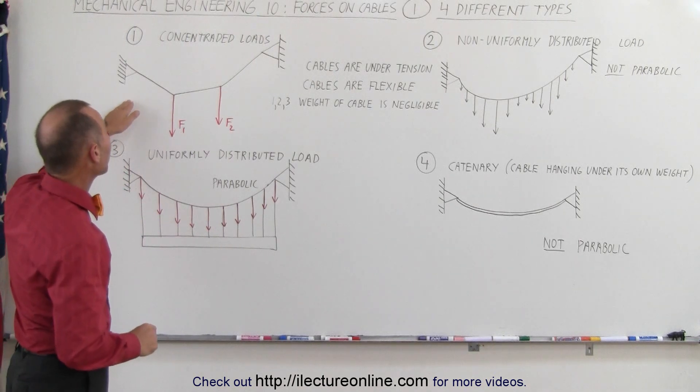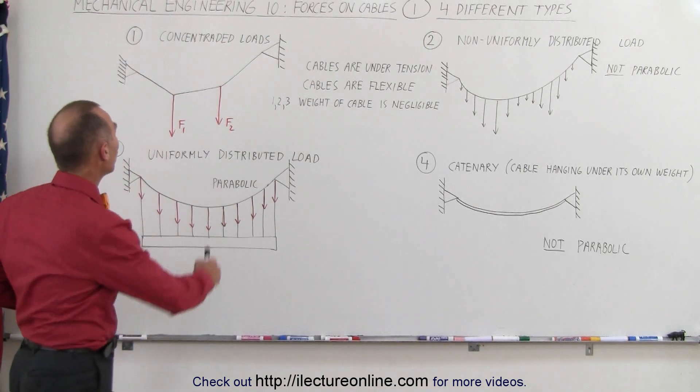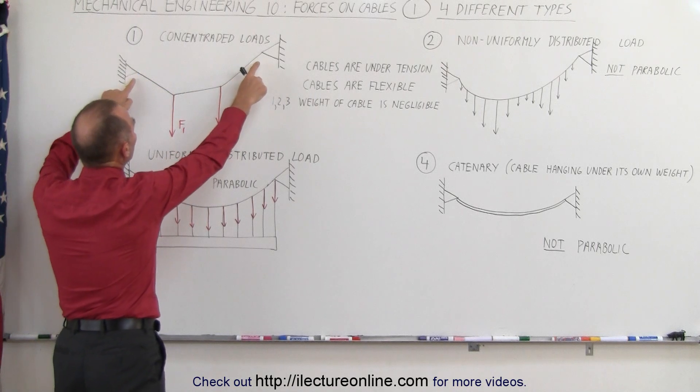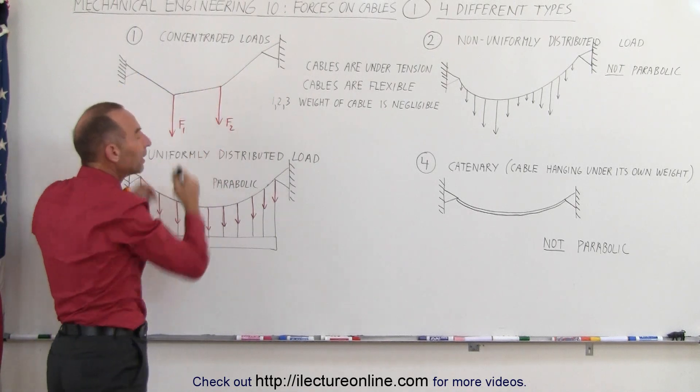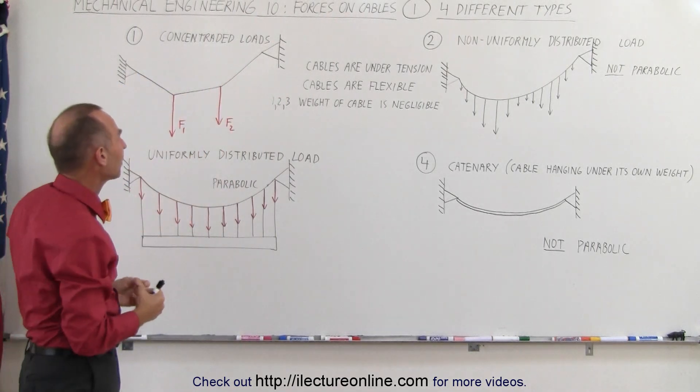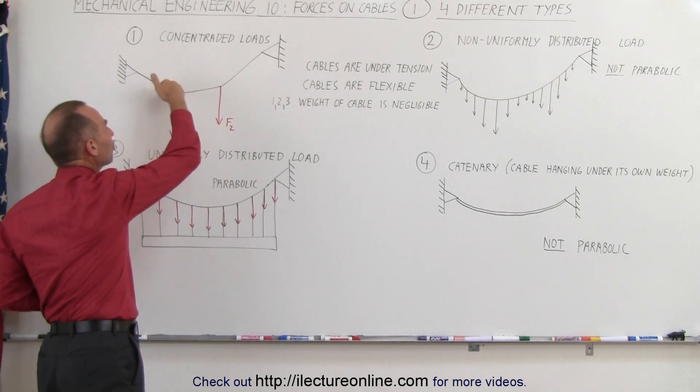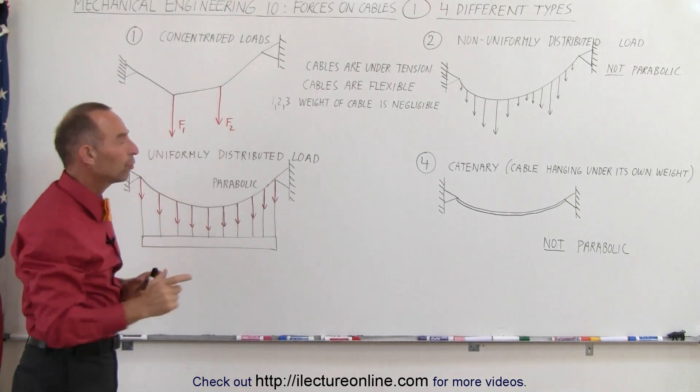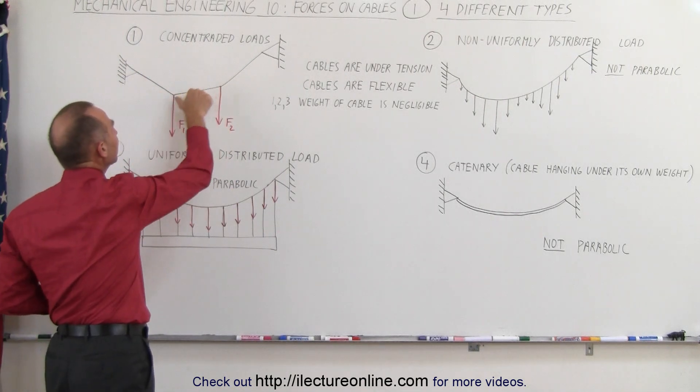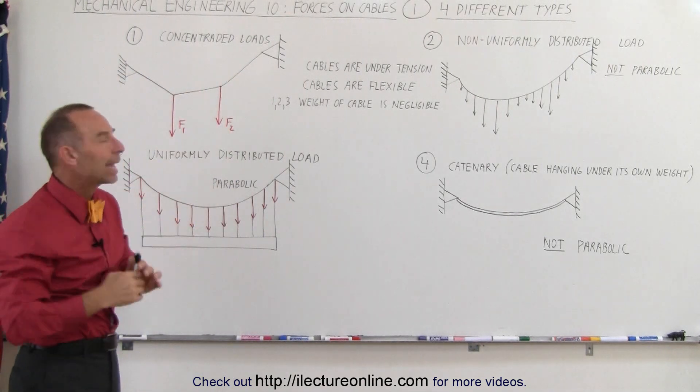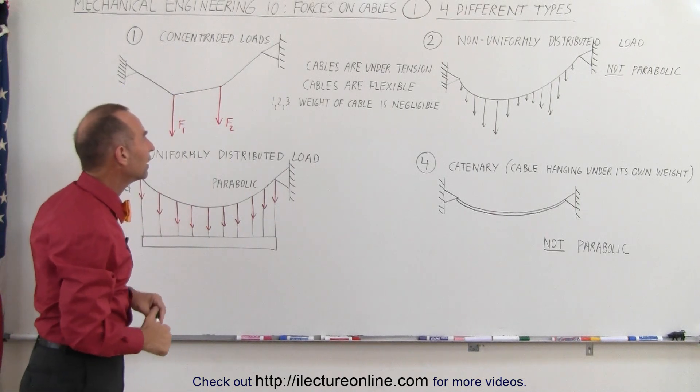The first one is where we have concentrated loads. We have a cable attached between two support points and just a few places where there's a load suspended from the cable. That causes the cable to have specific sections which are essentially straight, and the forces between each of the sections will be different, or the tension in the cable on each of the sections will be different.